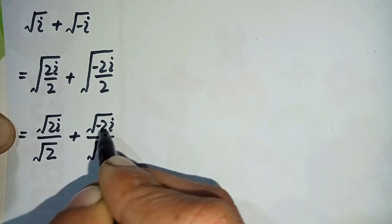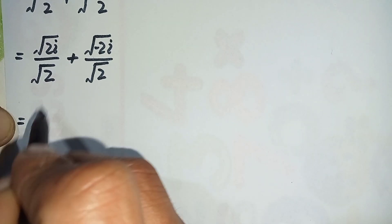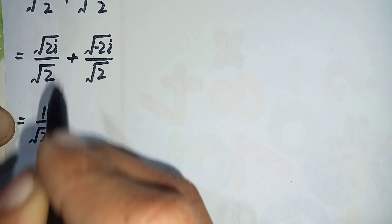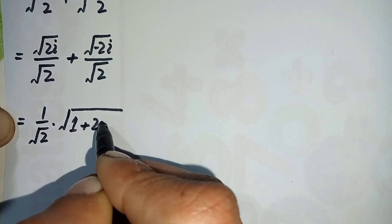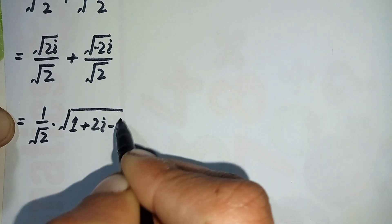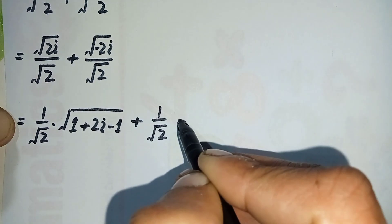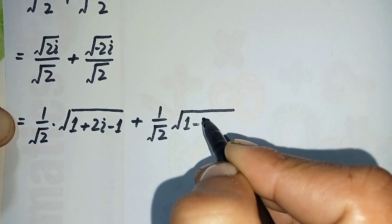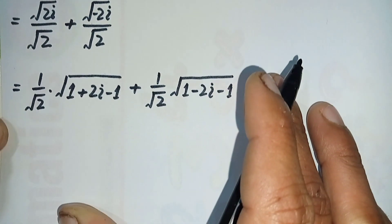In the next step we separate one over square root of two from the numerator. So this equation becomes one over square root of two times square root of one plus two iota minus one — here I add and subtract one with two iota — plus one over square root of two times square root of one minus two iota minus one, adding and subtracting one with minus two iota.